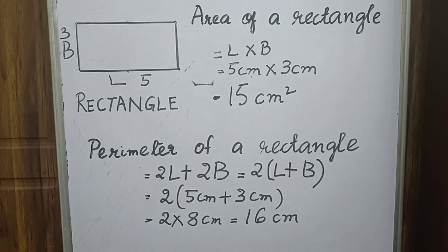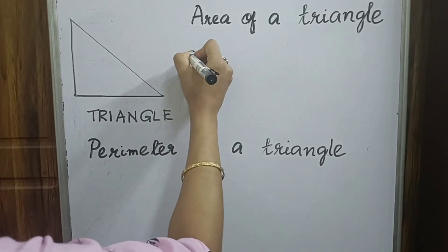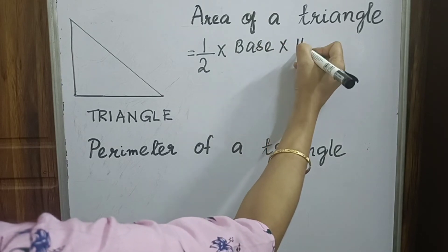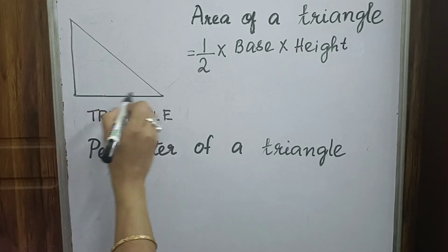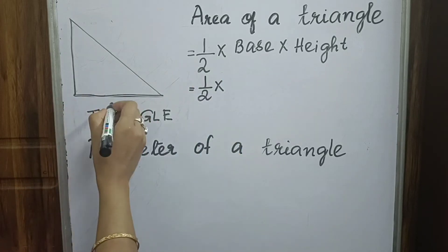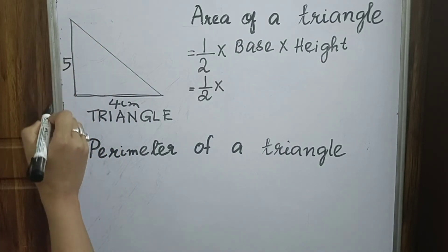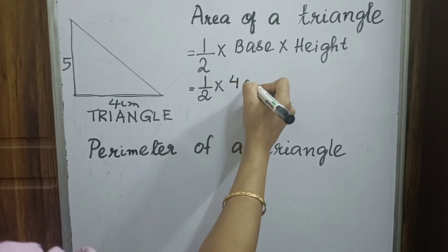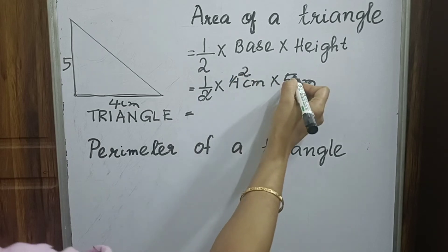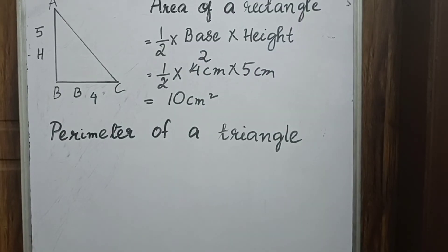Now we will find out the area and perimeter of a triangle. Area of a triangle equals half into base into height. This is the base of the triangle. If the base is 4 cm and the height is 5 cm, then area equals ½ × 4 cm × 5 cm, which equals 10 cm².